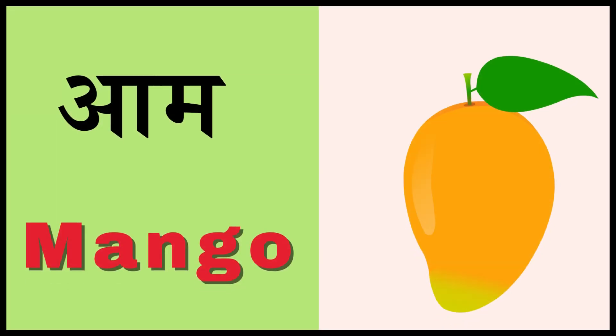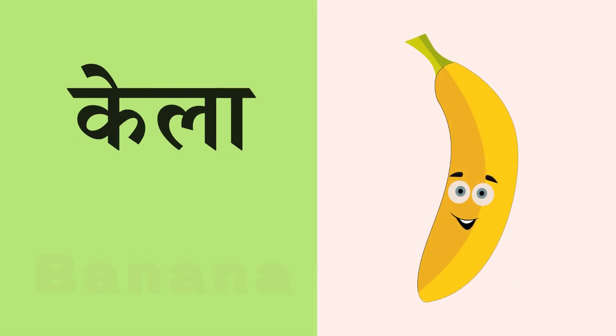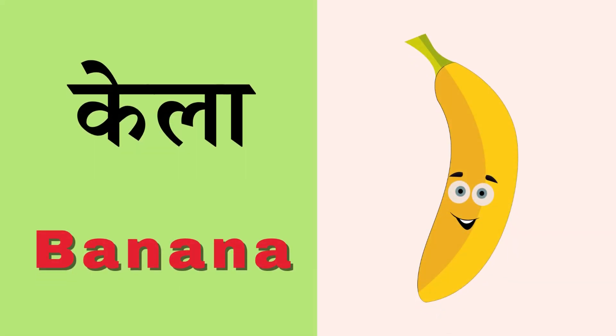Aam means Mango, M-A-N-G-O, Mango. Kela means Banana, B-A-N-A-N-A, Banana.